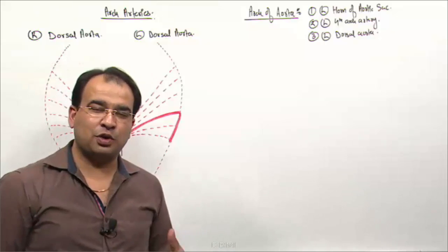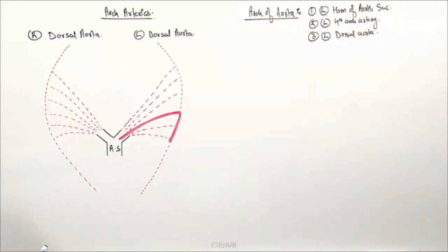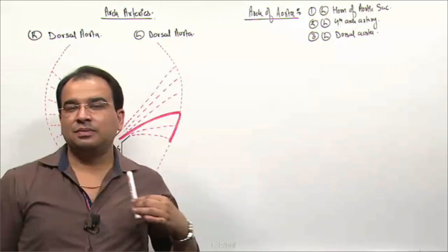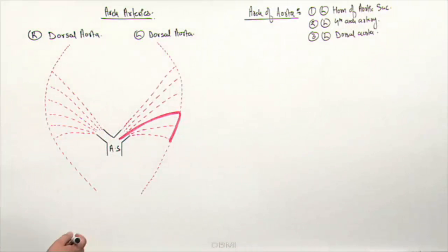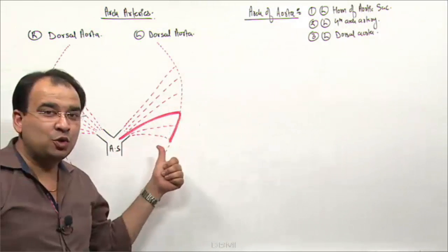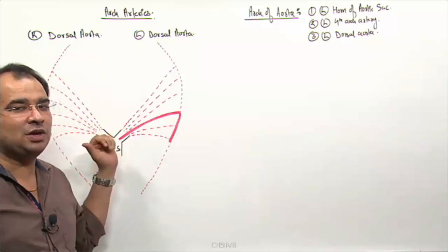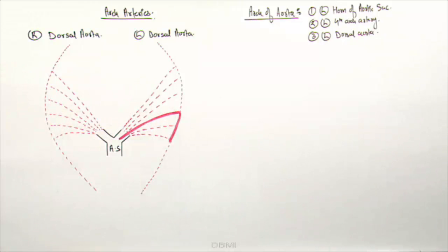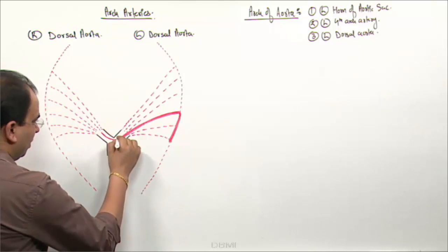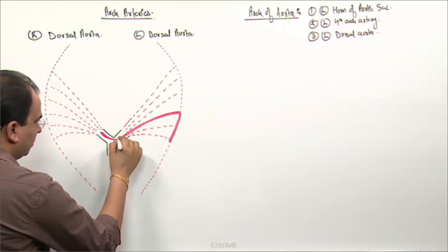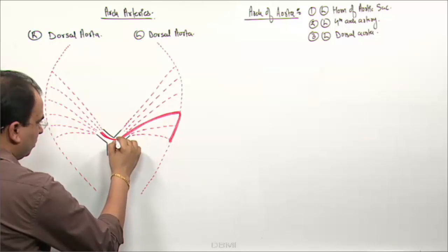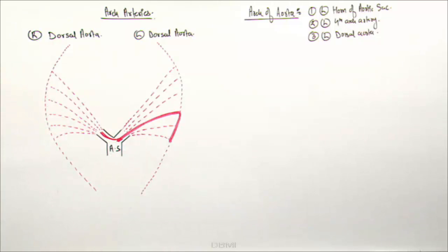The main branches coming out of the arch of aorta are: left subclavian, left common carotid, and brachiocephalic artery. Brachiocephalic artery goes towards the right side because it again divides into subclavian and common carotid. The brachiocephalic artery is derived from the right horn of the aortic sac — that is all.